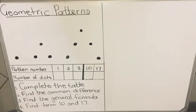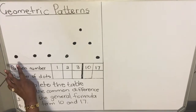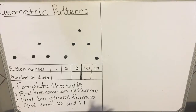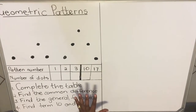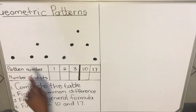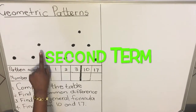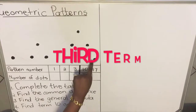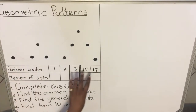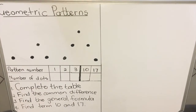Hello everyone, this is a lesson on geometric patterns. They will give you shapes like dots or any shape — these are called geometric patterns. In this pattern, the first term has one dot, the second pattern has three, and the third pattern has five.